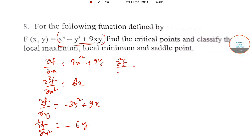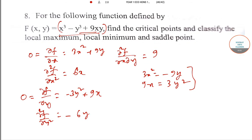And also ∂²F/∂x∂y, that will be 9. So now for these critical points you have to equate the first order equal to 0. So this will give you 3x² equals -9y. And in this case you will get 9x equals 3y². So you need to solve these two and find the value of X and Y. These will be the critical points.